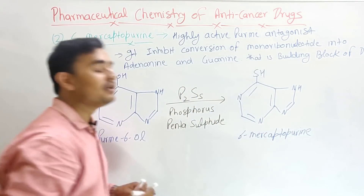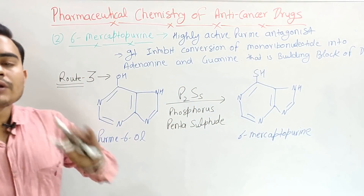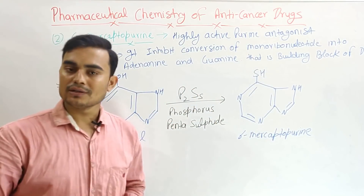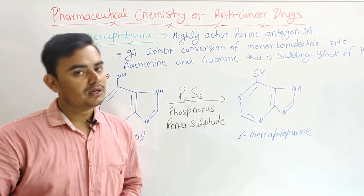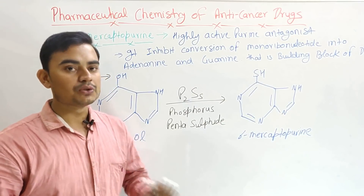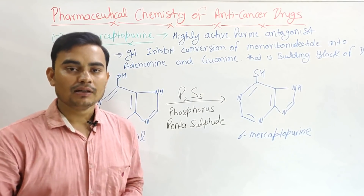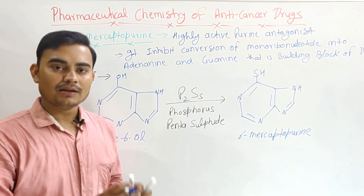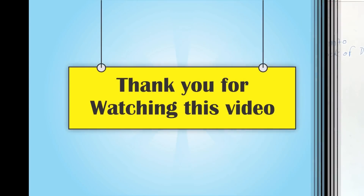So these are three routes for the synthesis of 6-mercaptopurine. You can choose any one — they are very easy and convenient. Thank you.